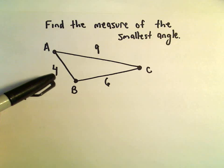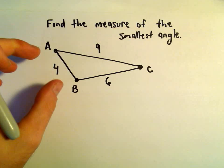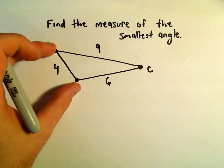We have side lengths of 4, 6, and 9. The first observation is the smallest angle is going to be opposite the side of the triangle that has the shortest length.